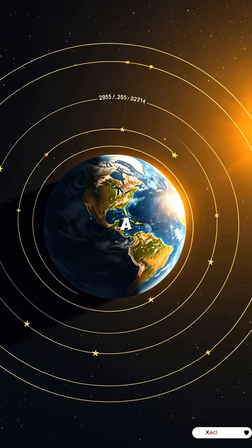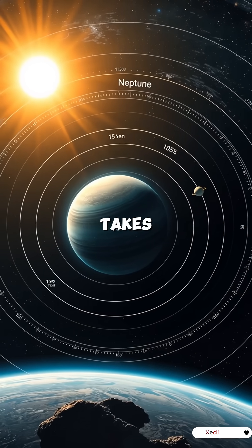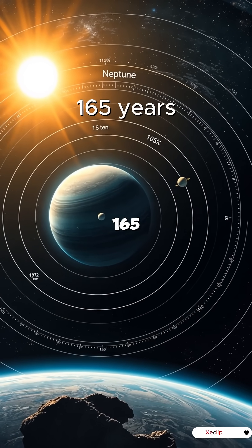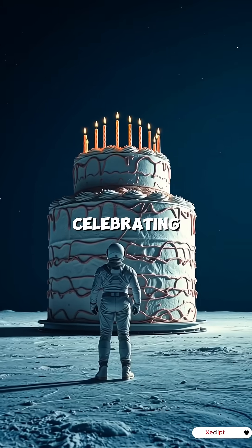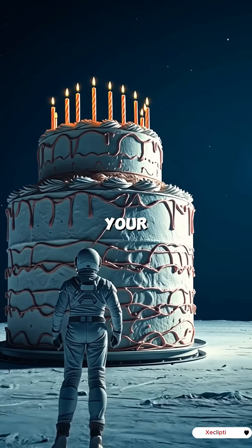While Earth completes a year in 365 days, Neptune takes a staggering 165 years to orbit the Sun. Imagine celebrating only one birthday your entire life.